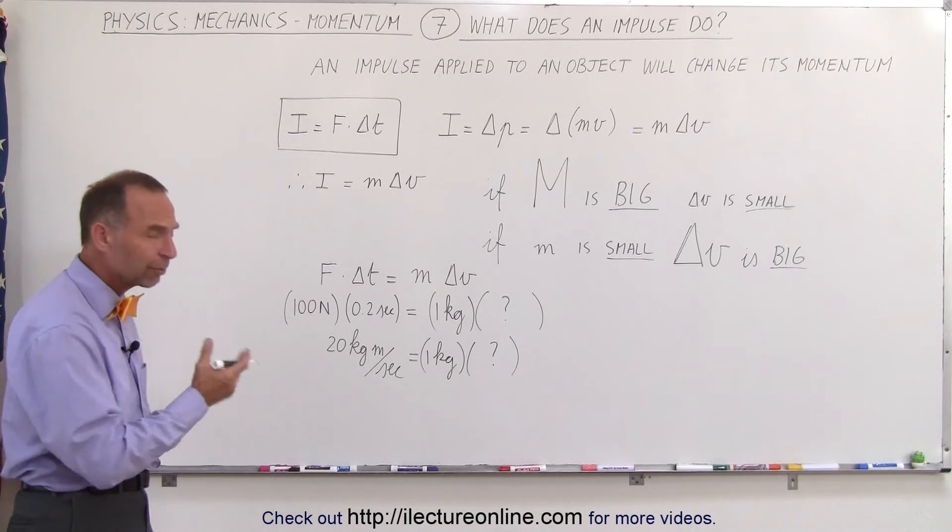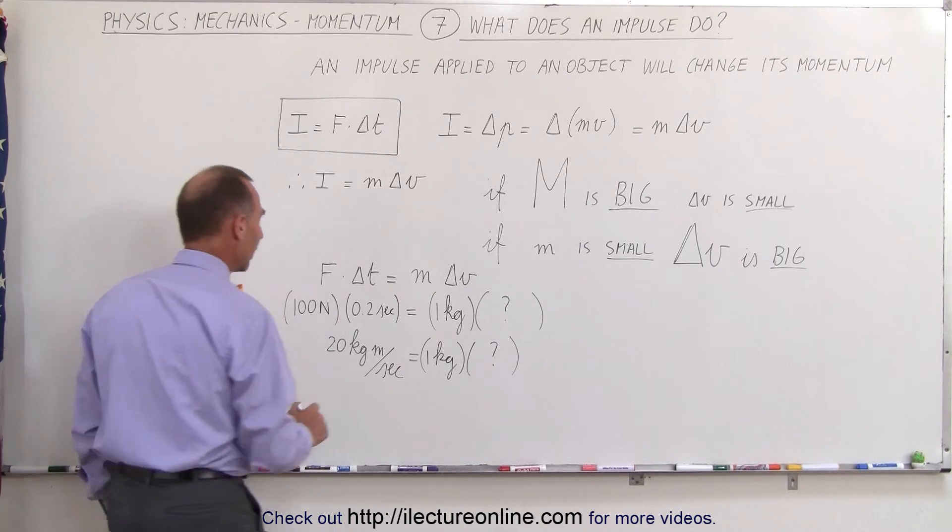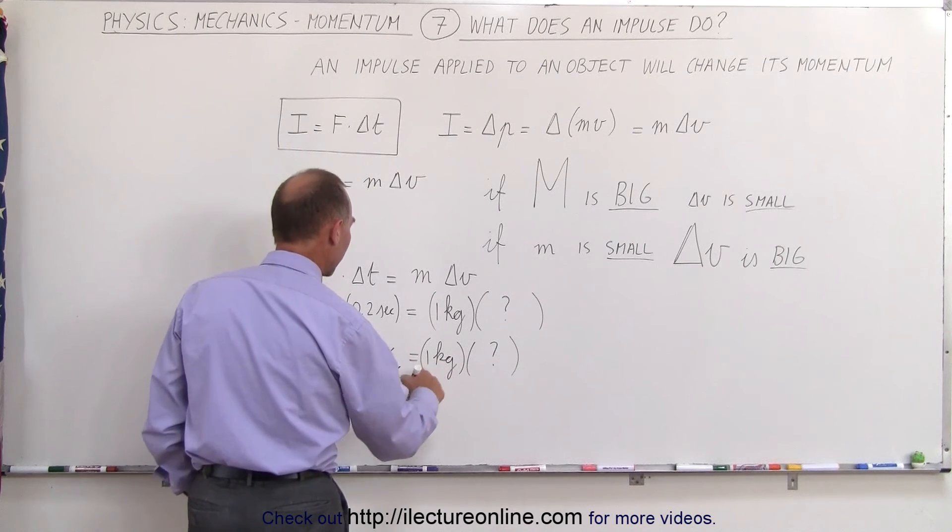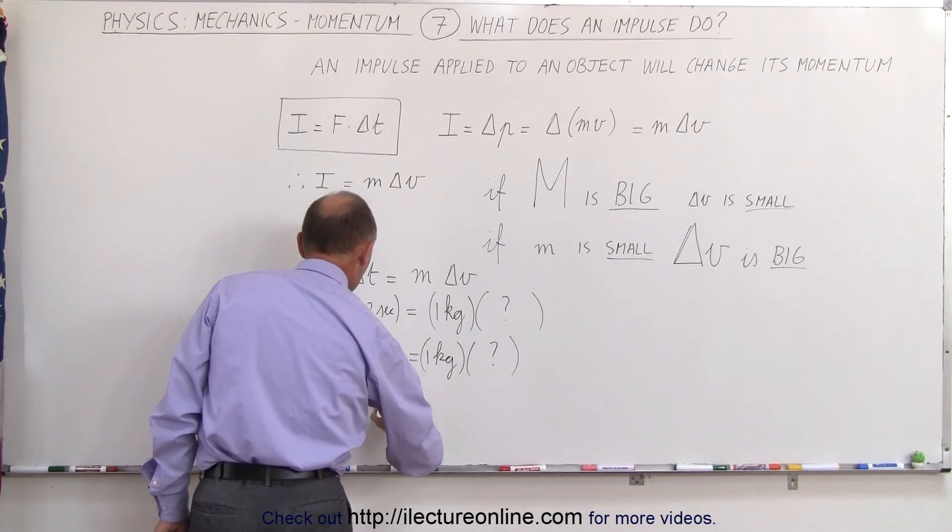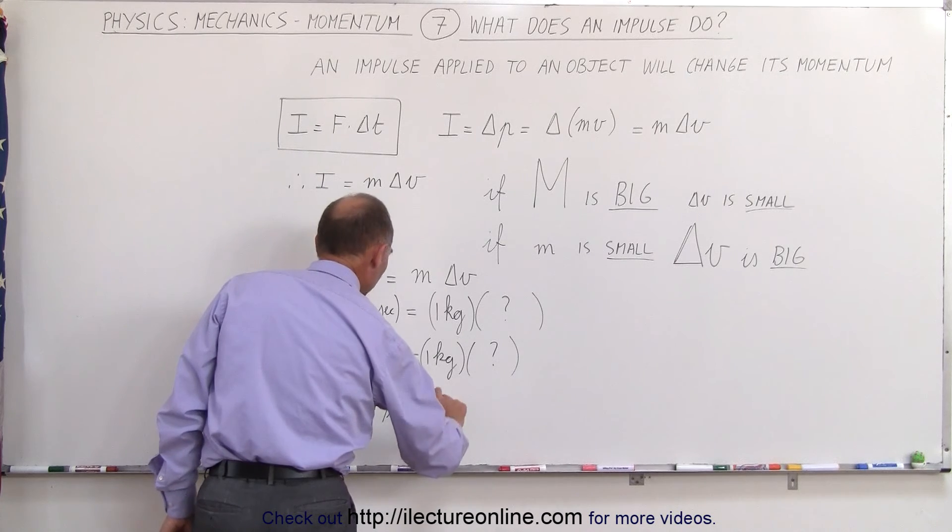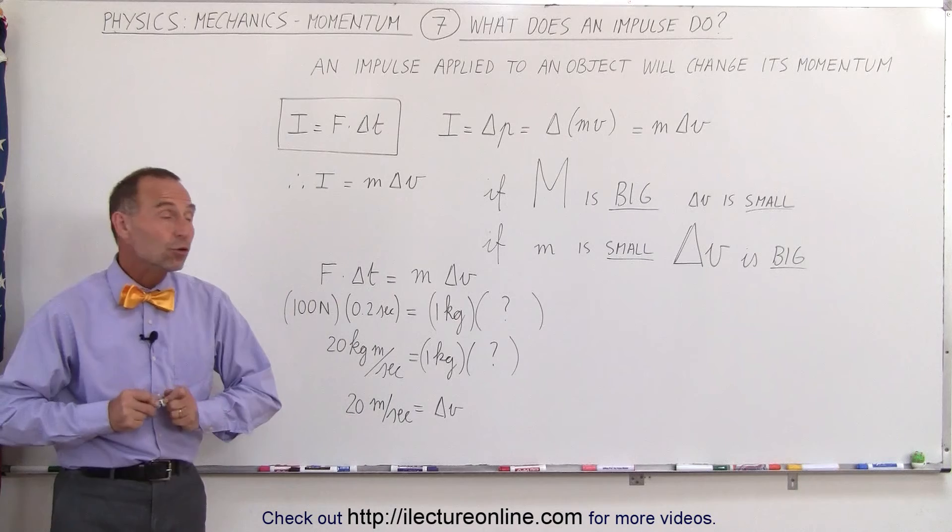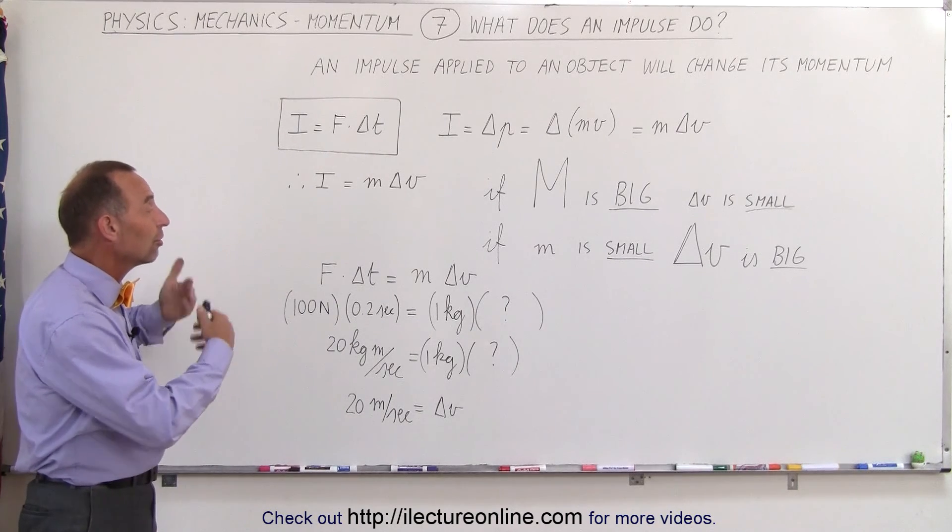If we now divide both sides by 1 kilogram, then we get 20 divided by 1, which is 1 kilogram divided by kilogram - it disappears. So we end up with 20 meters per second equals the change in the velocity, and that's how we use impulse to figure out the change in the velocity of the object.